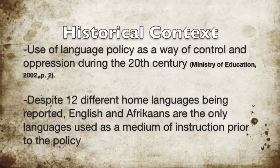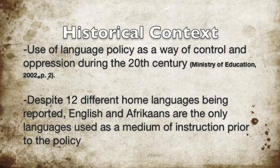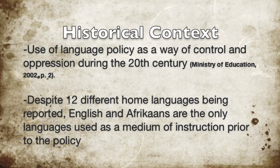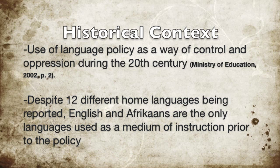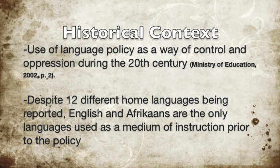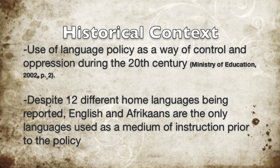Oppression and control have played a significant role in South Africa's past. The use of language policy as an instrument of that control, oppression, and exploitation was one of the factors that triggered the two great political struggles that defined South Africa in the 20th century: Afrikaners against British imperialism, and the black community against white rule. Prior to this new South African language policy for higher education, the policy of separate development resulted in the privileging of English and Afrikaans as the official language of the apartheid state, and the marginalization and underdevelopment of African and other languages.